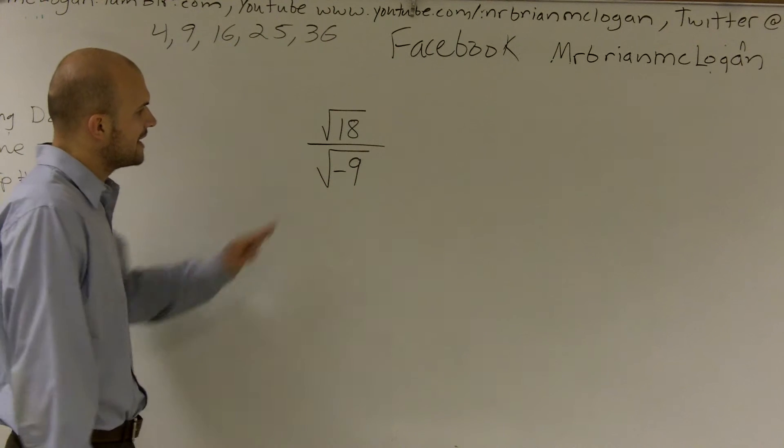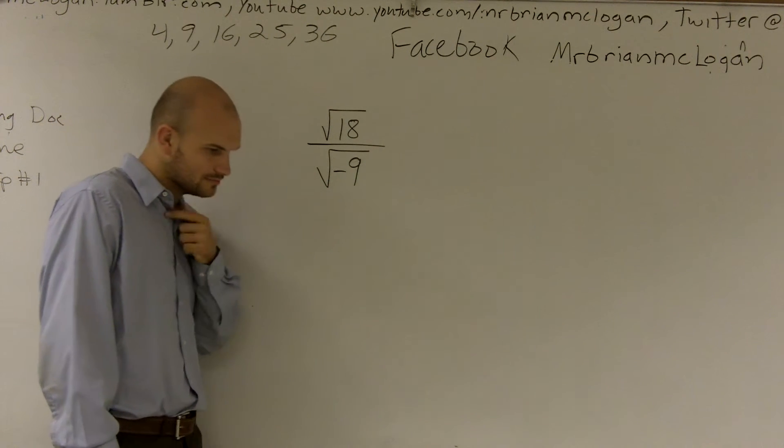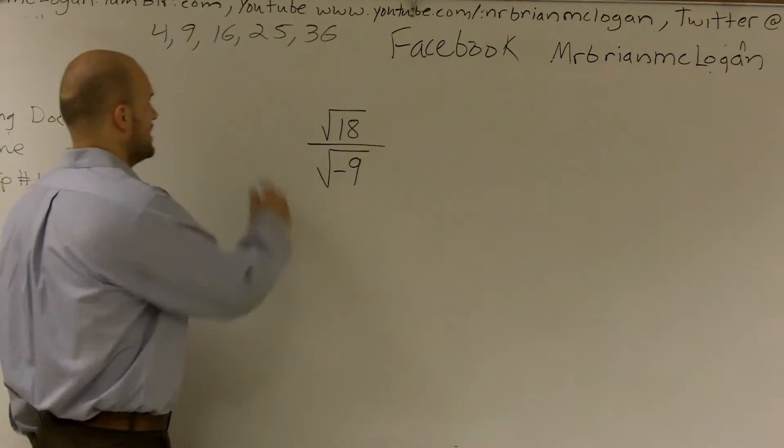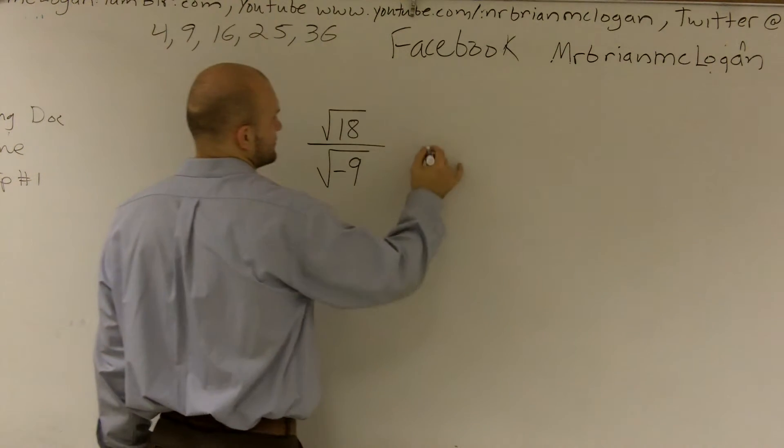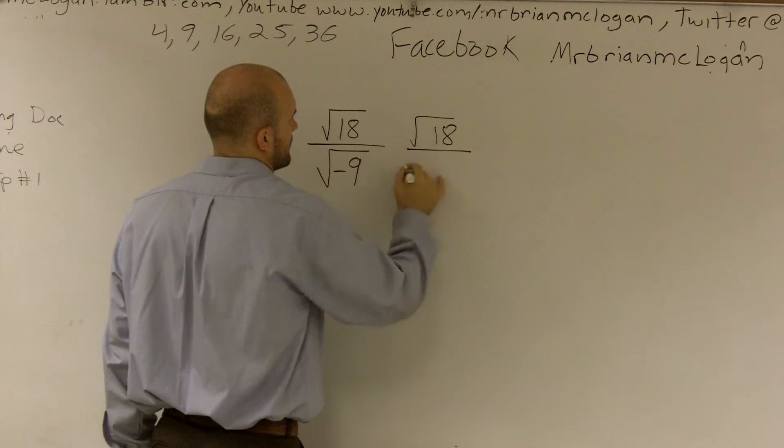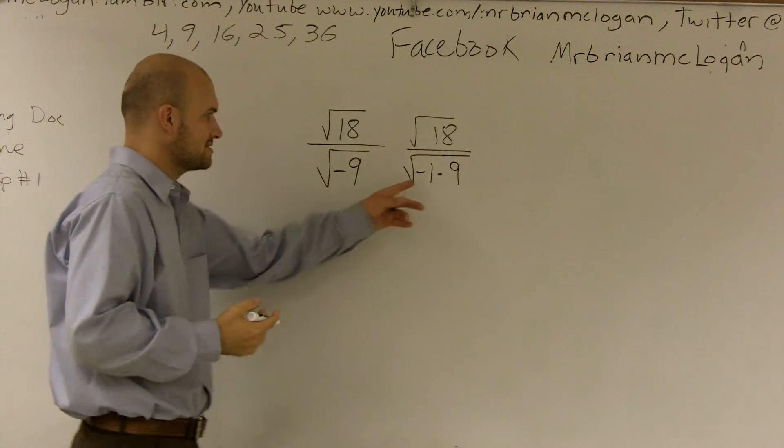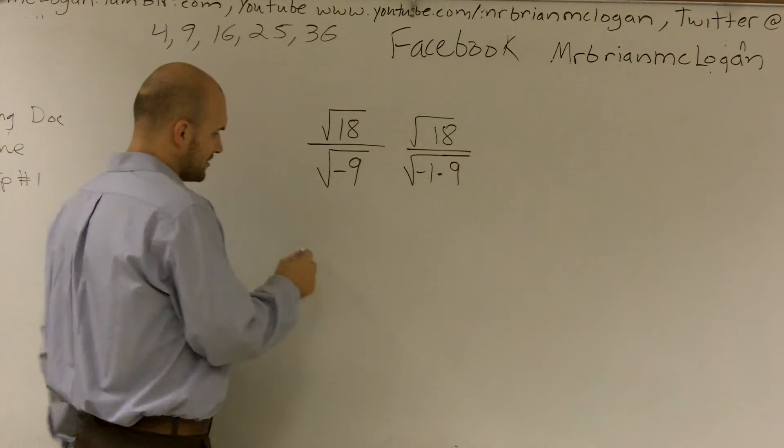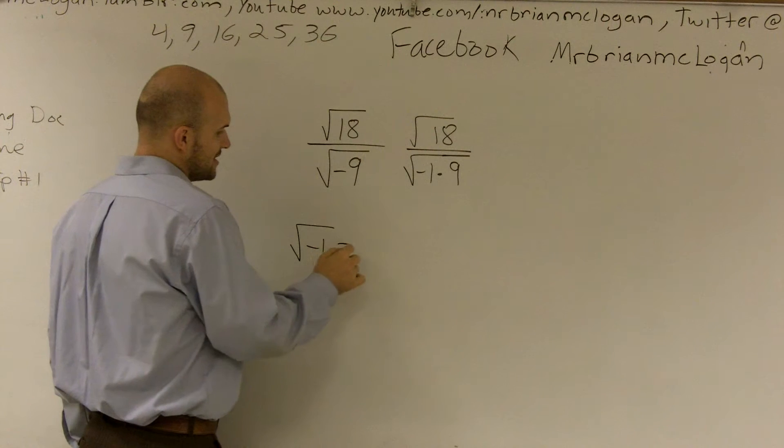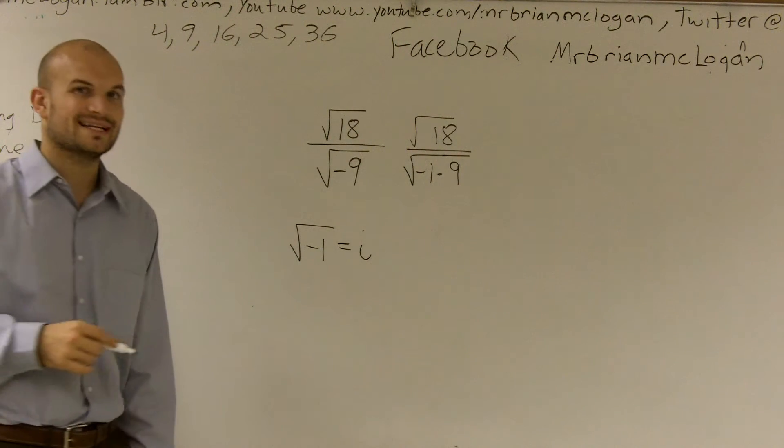So the first thing I do is I need to remember that whenever we have a negative number under a square root, that we can rewrite it. And the reason why I can rewrite it like that is just negative 1 times 9 is negative 9. But the reason why I did that is because I know that square root of negative 1 equals our little friend i.